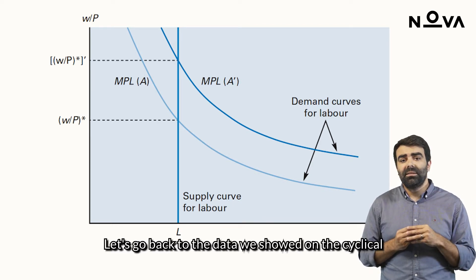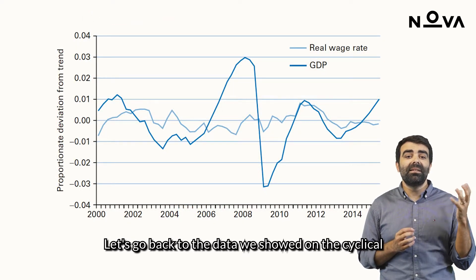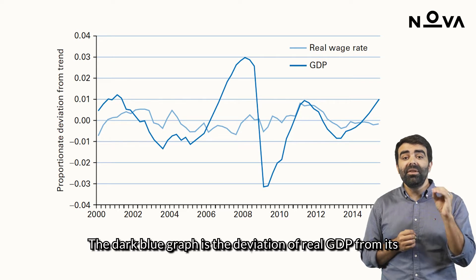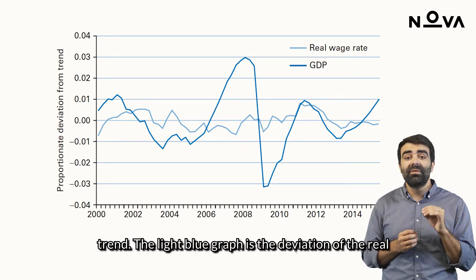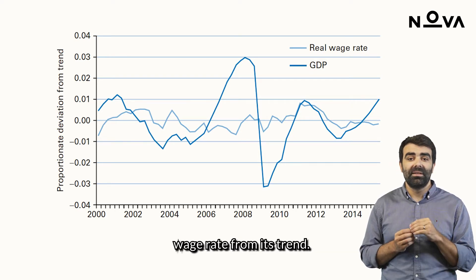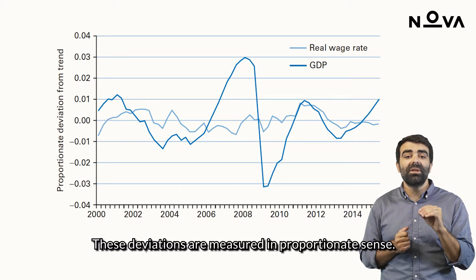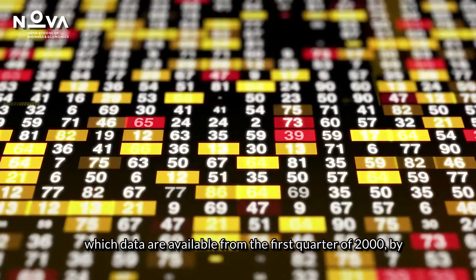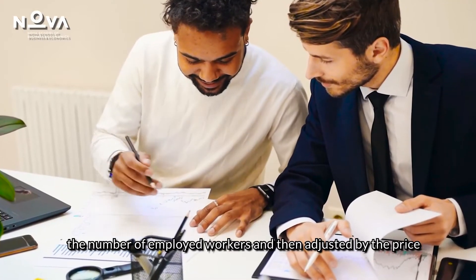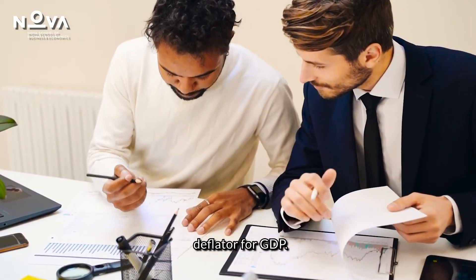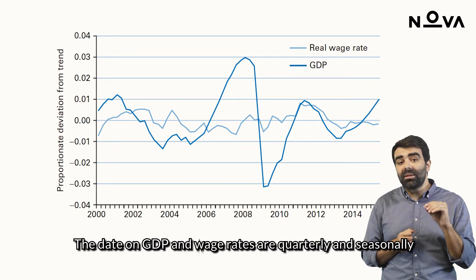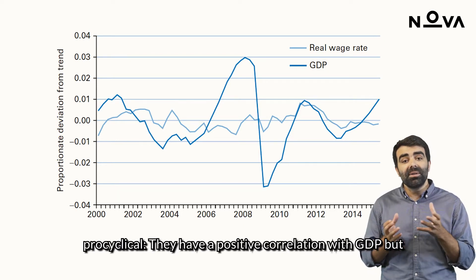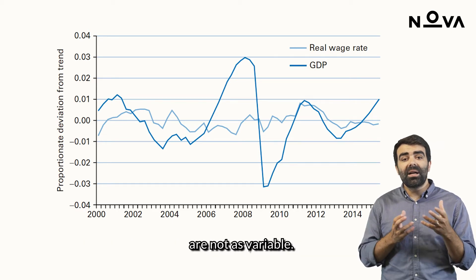How is it in reality? Let's go back to the data on the cyclicality behavior of Eurozone real GDP and the real wage. The dark blue graph is the deviation of real GDP from its trend, and the light blue graph is the deviation of the real wage rate from its trend, measured in proportionate terms. The real wage is calculated by dividing wages and salaries by the number of employed workers, then adjusted by the GDP price deflator. The data are quarterly and seasonally adjusted. What we see is that wage rates are indeed pro-cyclical.